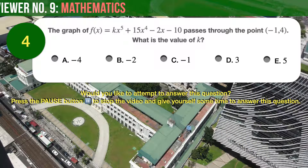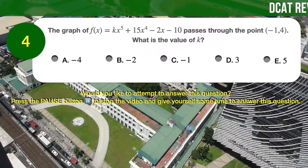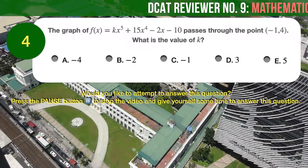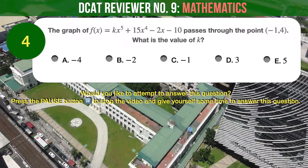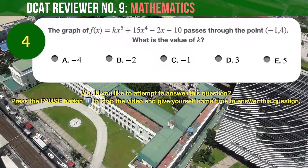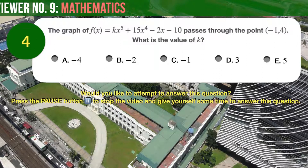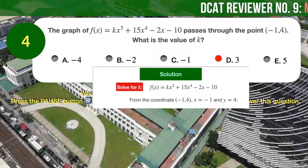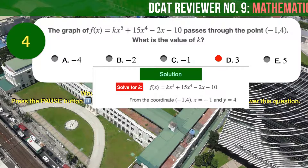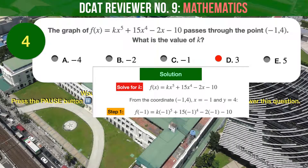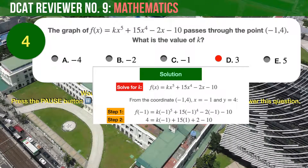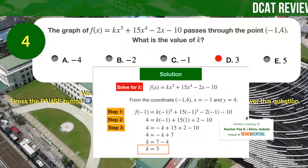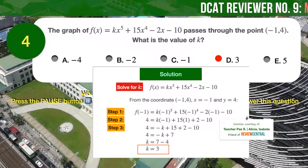Question number 4: The graph of f(x) equals kx raised to 5, plus 15x raised to 4, minus 2x, minus 10, passes through the point (−1, 4). What is the value of k? Answer choices: A: −4, B: −2, C: −1, D: 3, E: 5. The correct answer is D: 3. Since the graph passes through (−1, 4), we substitute x equals −1 and f(−1) equals 4 into the equation and solve for k, which yields k equals 3.